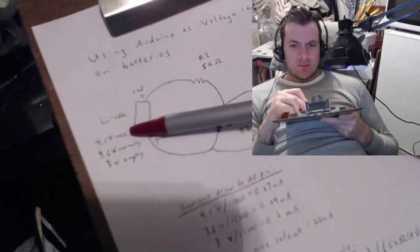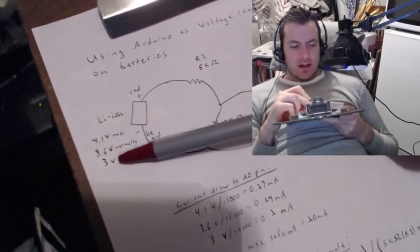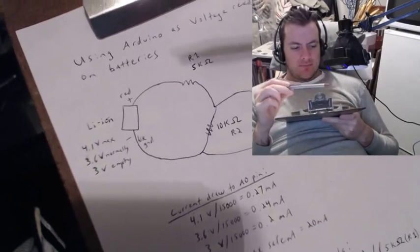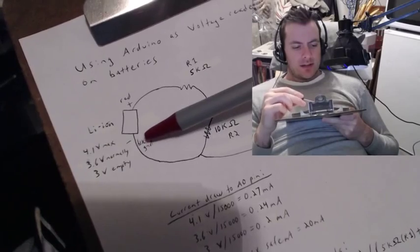They have a 4.1 volt max, 3.6 volt nominal or normal voltage, and 3 volts at empty. Red is positive, black ground, negative.